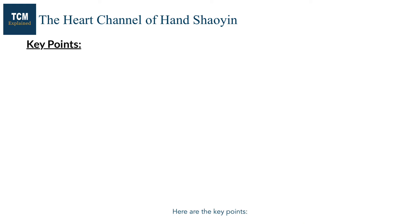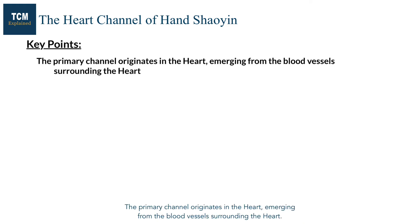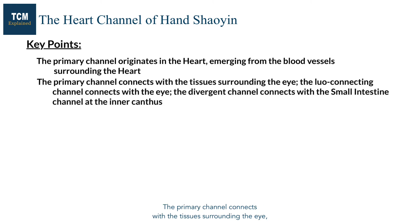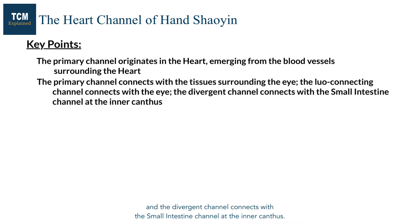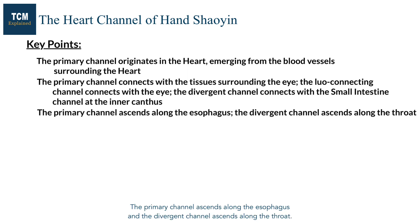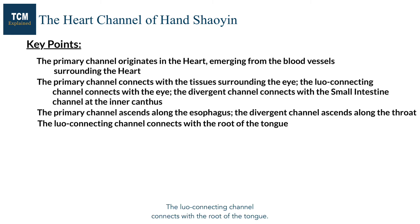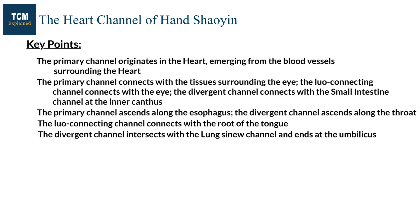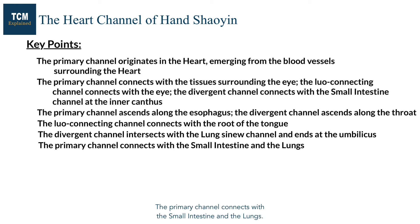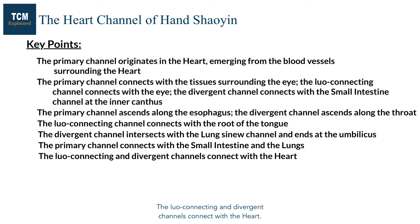Here are the key points. The primary channel originates in the heart, emerging from the blood vessels surrounding the heart. The primary channel connects with the tissue surrounding the eye; the luo connecting channel connects with the eye; and the divergent channel connects with the small intestine channel at the inner canthus. The primary channel ascends along the esophagus and the divergent channel ascends along the throat. The luo connecting channel connects with the root of the tongue. The sinew channel intersects with the lung sinew channel and ends at the umbilicus. The primary channel connects with the small intestine and the lungs, while the luo connecting and divergent channels connect with the heart.